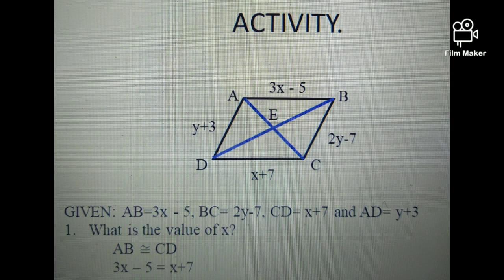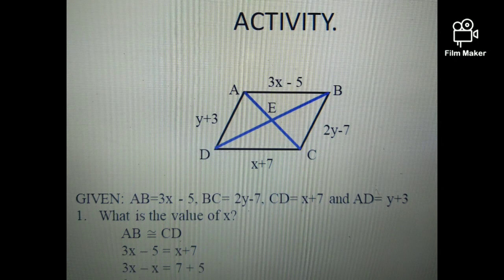Substitute the values of AB and CD. So AB is 3X minus 5, then equals to CD, which is X plus 7. Rearrange combining like terms. So 3X minus X is equal to 7 plus 5.